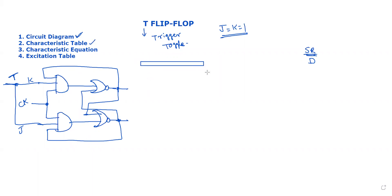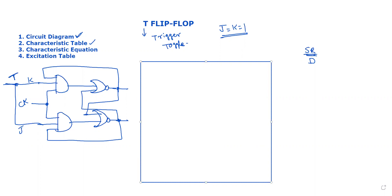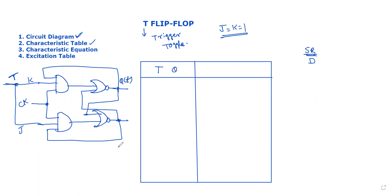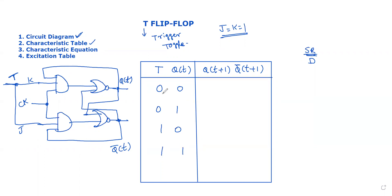The characteristic table shows the usual inputs with constraints. We check the next state. Here we have present inputs, present state Q(t), and present input T. The output to observe is Q(t+1). Q'(t) will be the complement. The output Q(t+1) is also denoted Q'(t+1).